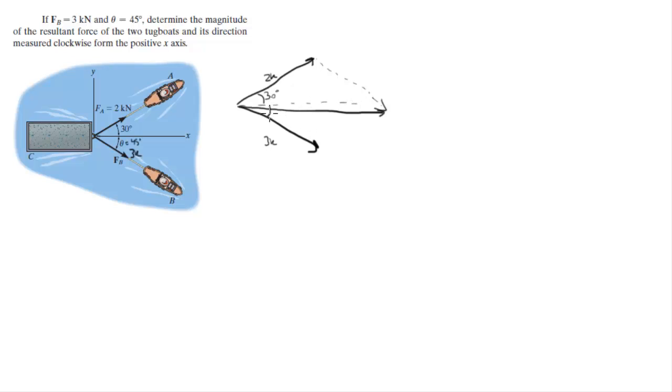And you know that this angle right here between the x-axis and 3k, not between the resultant force and 3k, is theta, which is the same thing over here, which is equal to 45 degrees. This is the 3k.